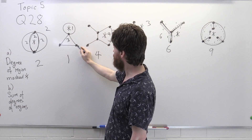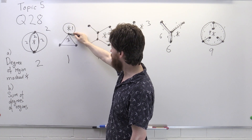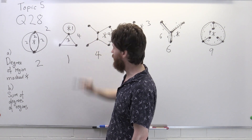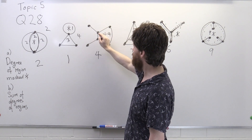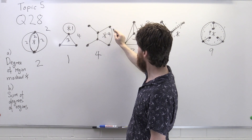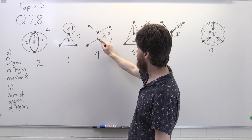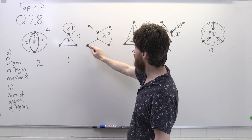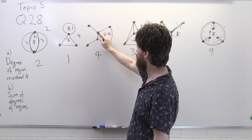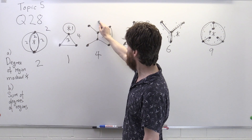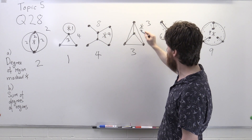For the second graph, the internal region is a triangle with degree three, and the external region has edges going around — one, one, one, one — degree four. But we also need to count the remaining boundary edges: continuing gives five, six, seven, eight. So the degree of the external region is eight, and the sum is three plus one plus four plus eight.